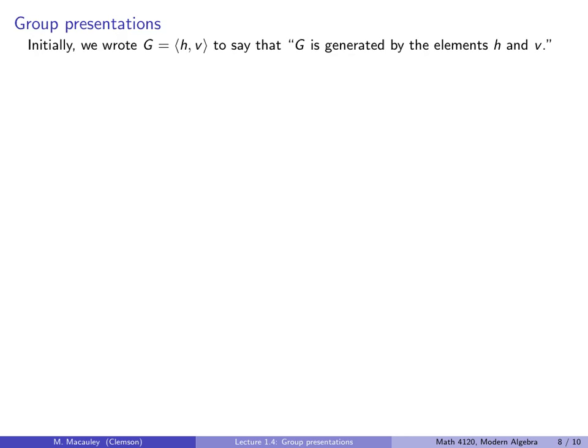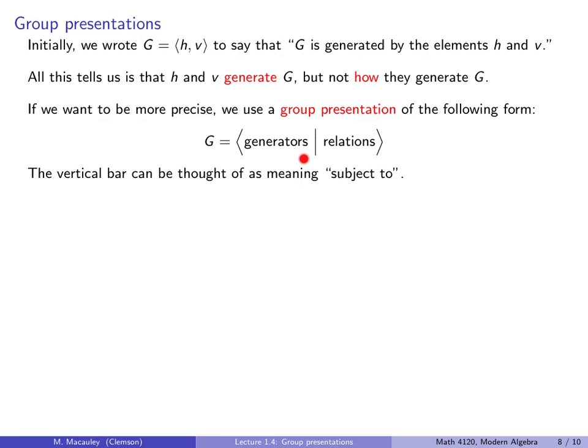At this point, I need to clarify something that was a little bit sloppy I said earlier. In the first two lectures, I would write something like this, I said G is generated by the elements H and V. And when I said that, all that I was saying was that H and V generate G. But I didn't say how they generate G. And that's the point of a group presentation, it doesn't just say what generates the group, but how they do. So if we want to be more precise, we use a group presentation that looks like this. These are what we've seen in the previous couple of slides.